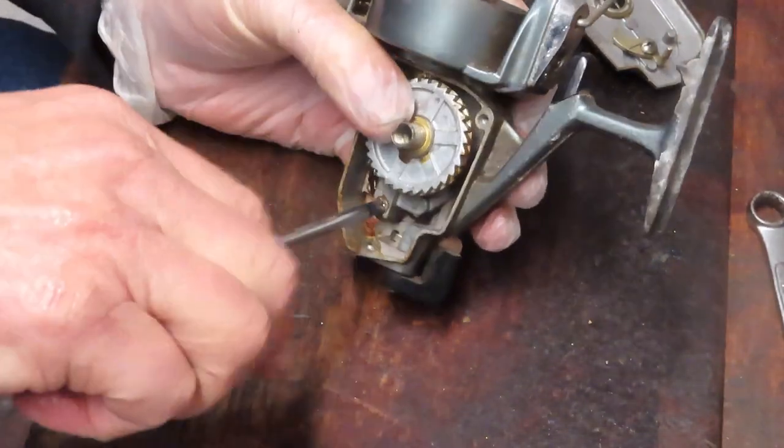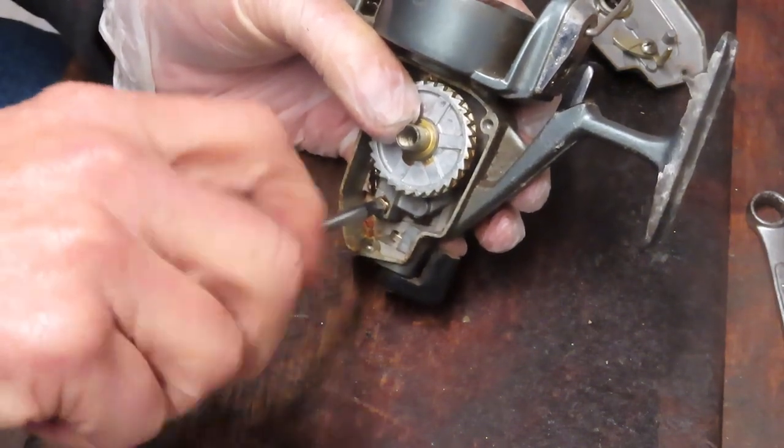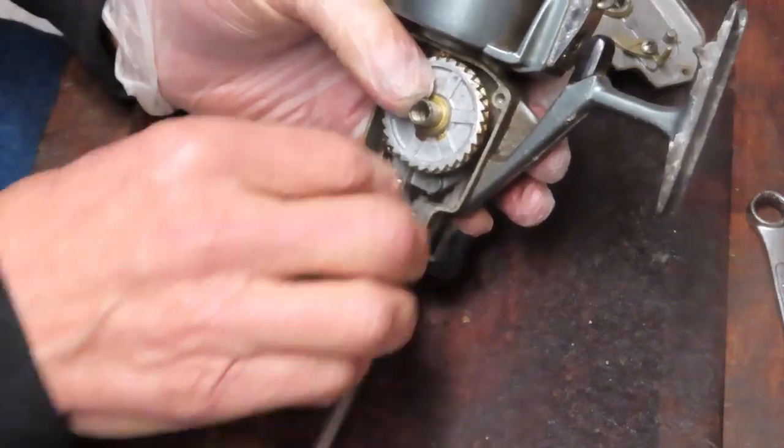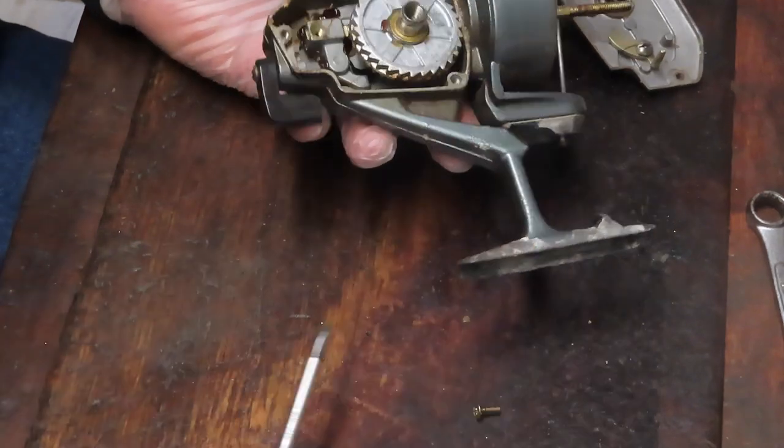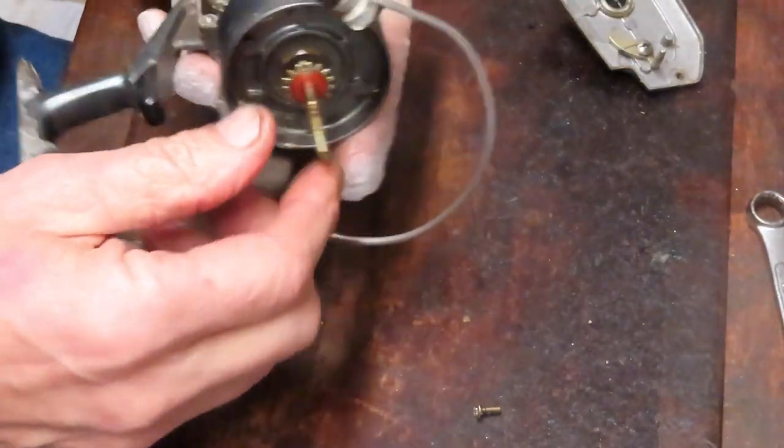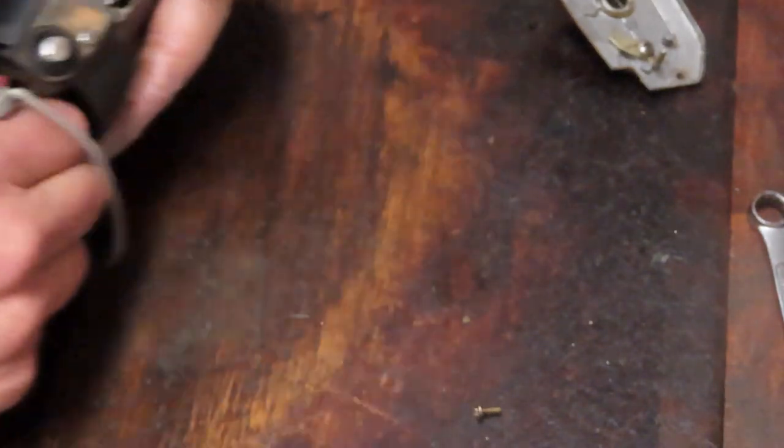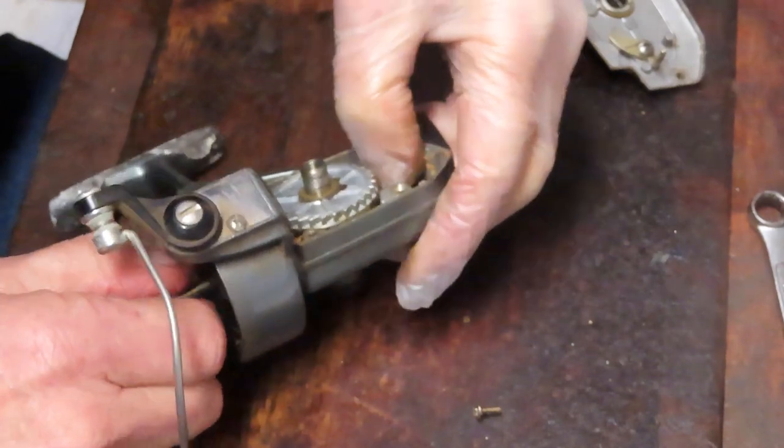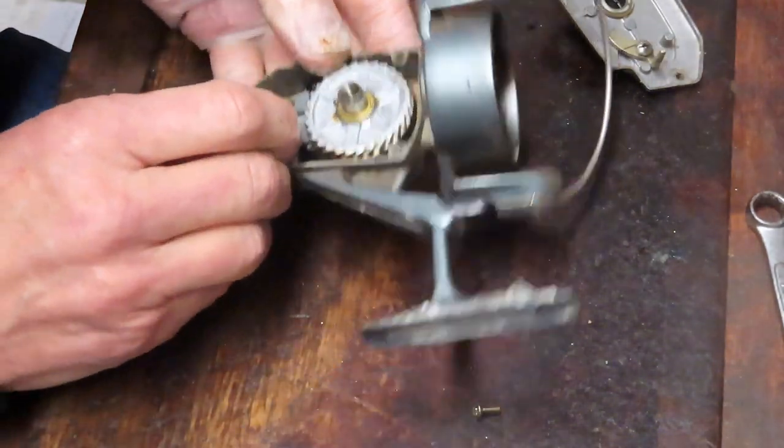That's kind of standard on these reels. There's a back end of this main gear that's driving an oscillating gear, and a lot of times you cannot get the main gear out without getting that other piece out.